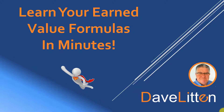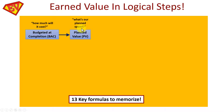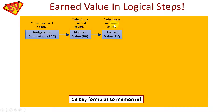There are 13 key formulas to memorize. The first metric is how much your project will cost — called Budgeted at Completion, or BAC — normally given in any question. Next is Planned Value (PV): what is our planned spend at a point in time, such as the end of a stage or work package. Any earned value question will set the scene of the whole project, then give a snapshot at a certain point. Next is Earned Value (EV): what have we earned so far.